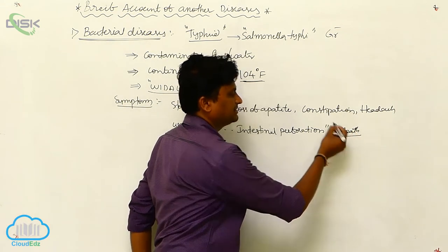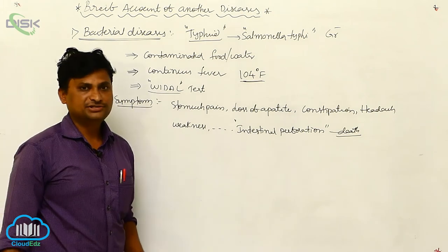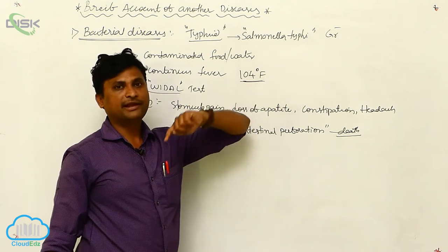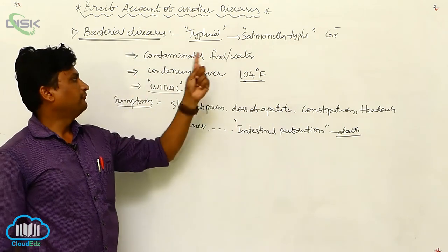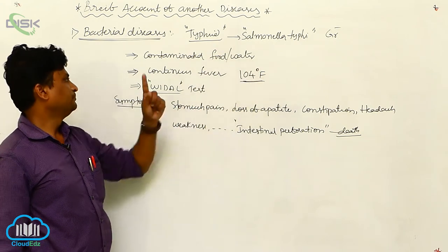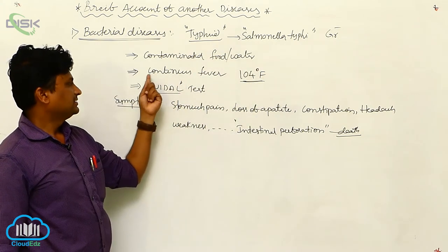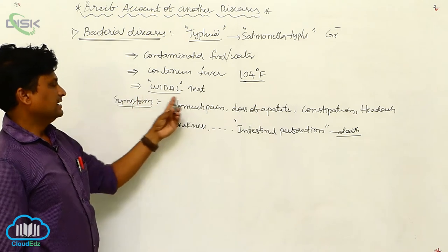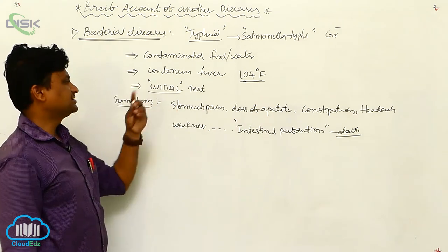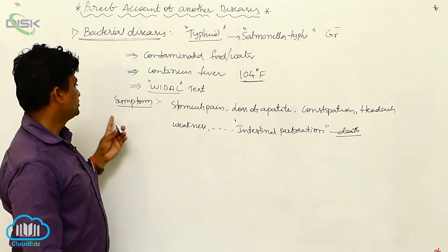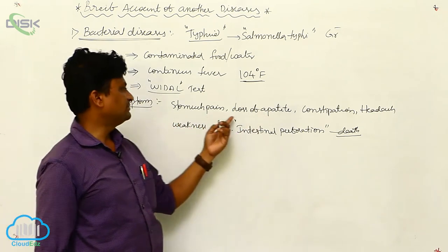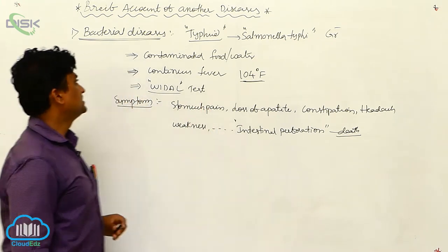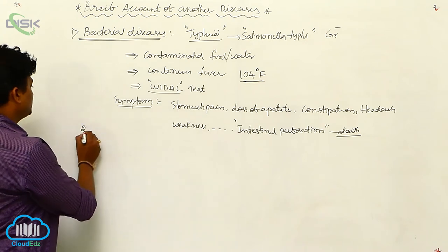To summarize typhoid: it is caused by Salmonella typhi, a gram-negative bacteria, spread through contaminated food and water. It presents with continuous fever up to 104 degrees, identified by the Widal test, with symptoms including stomach pain, loss of appetite, constipation, headache, weakness, and intestinal perforation.